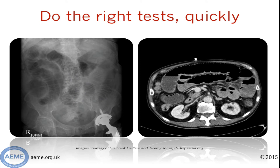No one presenting with pain and vomiting should leave A&E without an x-ray. But how sensitive is plain abdominal x-ray for picking up small bowel obstruction? At best, it's 60%, so it misses 4 out of 10 — something to remember when you're engaged in a turf war.